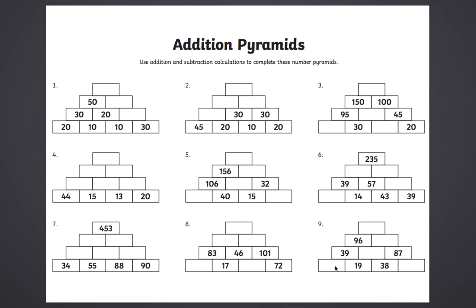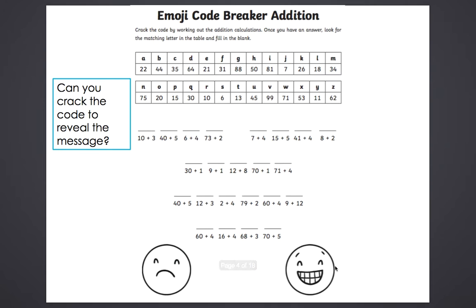The next one is a special crack-the-code puzzle. You work out the answer to the question — for example, 10 add 3 equals 13 — then find the number 13 in the code and write the letter above it, so you'd write the letter T. Then 40 add 5 equals 45, and the letter U is above 45. If you work through all the questions you will crack the code and reveal a very special message. You might even like to design one for somebody else to complete.